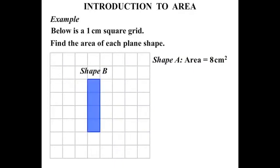Shape B, also a rectangle. One, two, three, four. We say that shape B then has an area of four square centimeters.